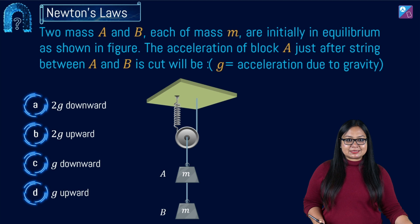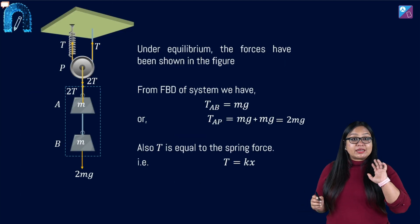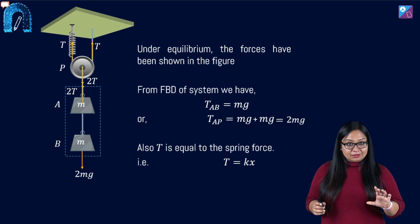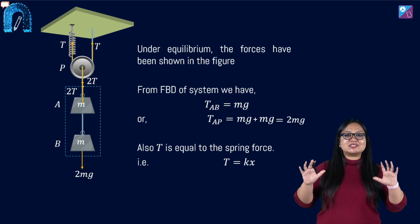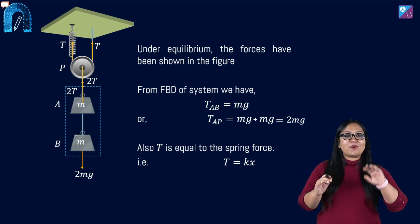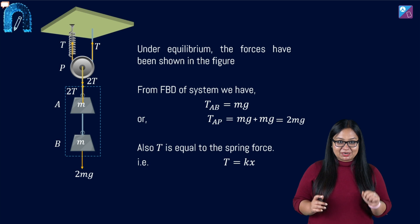Let's analyze it before cutting. Before cutting the string between A and B, the system was in equilibrium. So we can apply the condition of equilibrium, which is net force equal to zero on all the blocks over here separately.